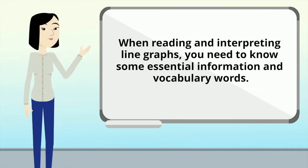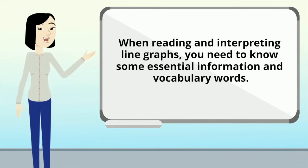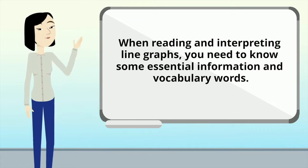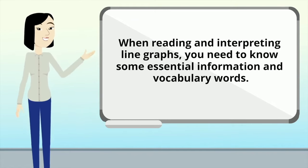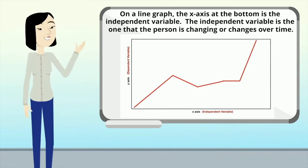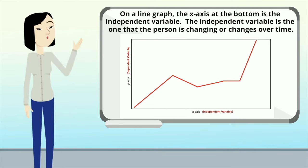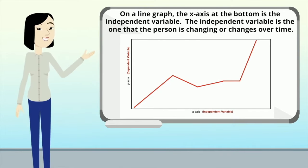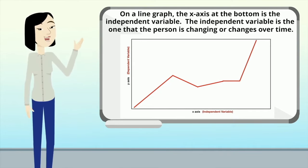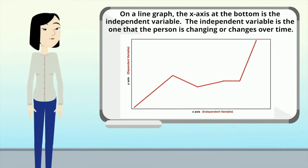When reading and interpreting line graphs, you need to know some essential information and vocabulary words. On a line graph, the x-axis at the bottom is the independent variable. The independent variable is the one that the person is changing, or it could be something that changes over time.